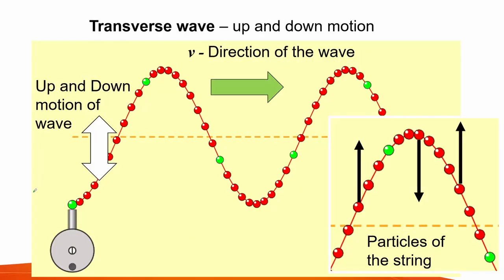A transverse wave is distinguished by its up and down motion. In figure A, we see a rope that is disturbed by an oscillator in an upward and downward motion. This wave travels through the rope with a velocity V perpendicular to the motion of the oscillator. If we imagine that this rope is composed of particles aligned together, the particles move upward and downward throughout the string.